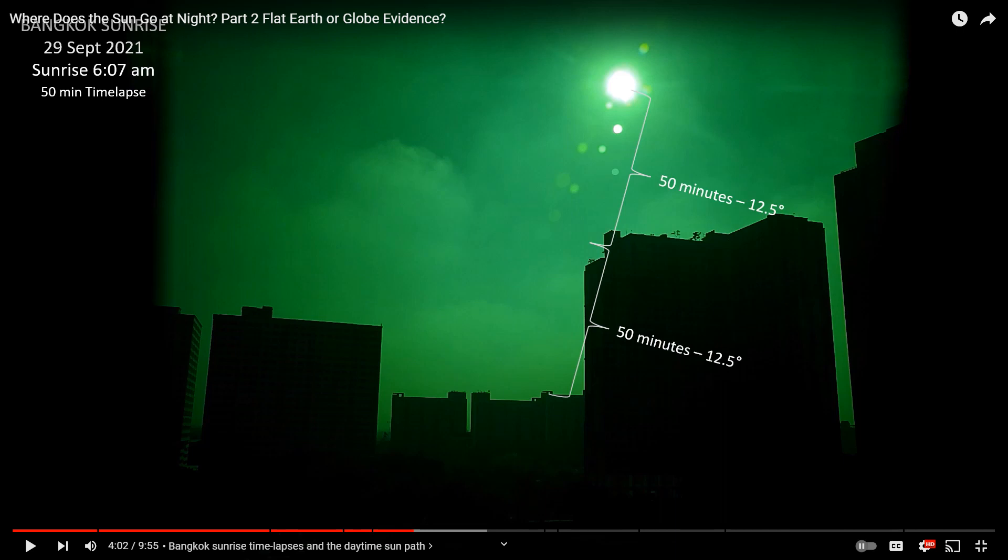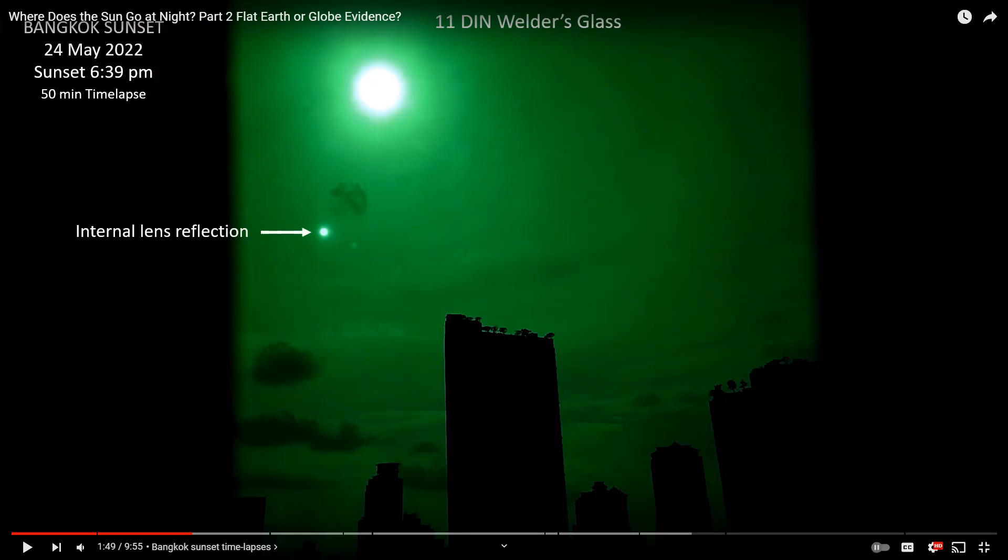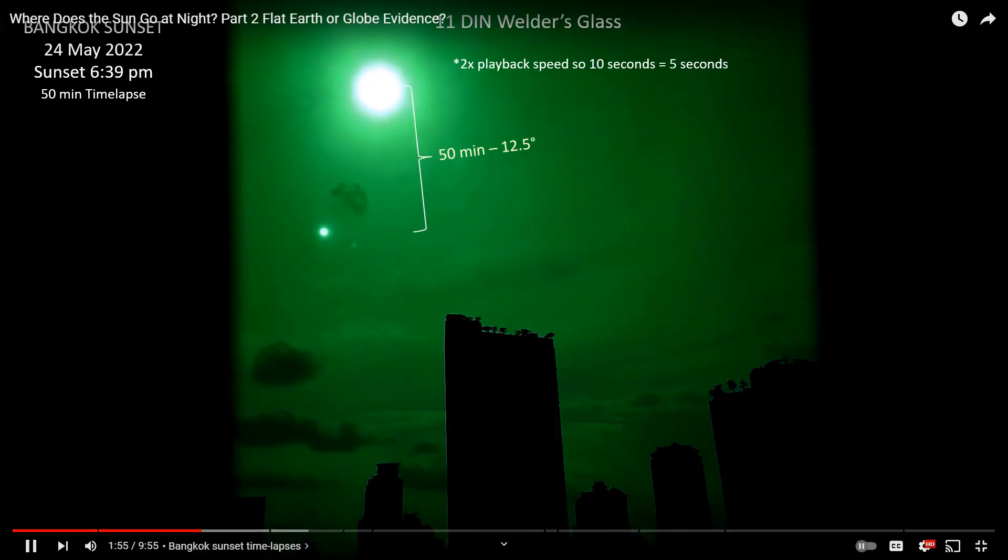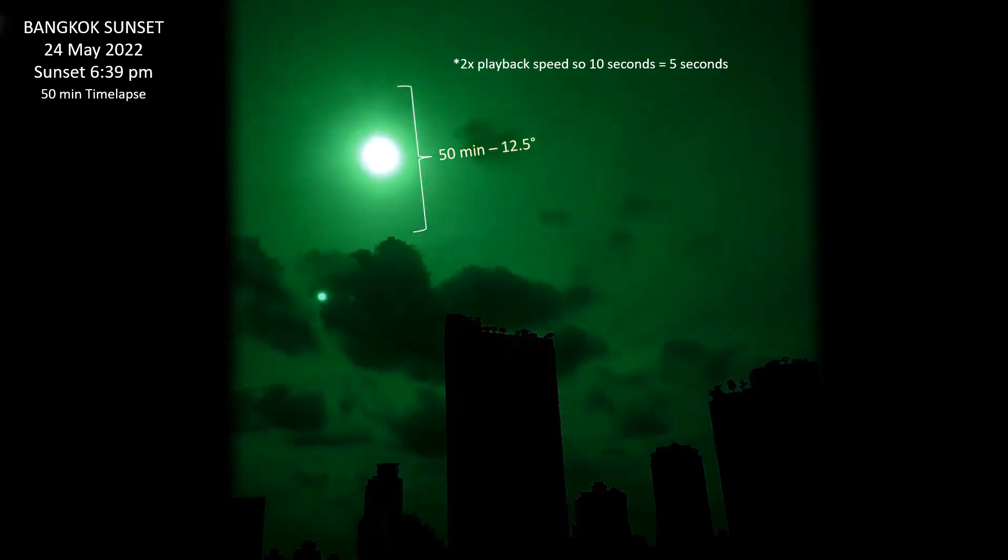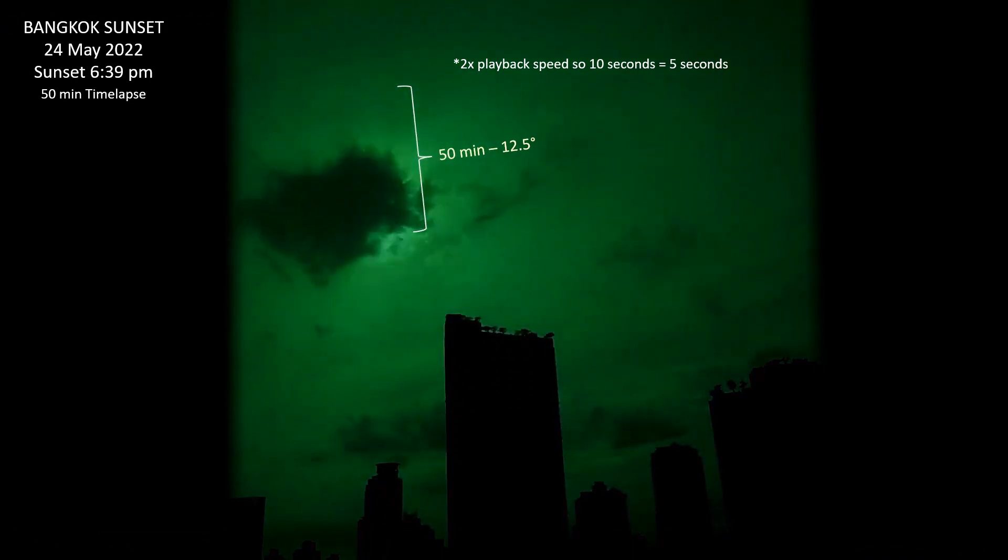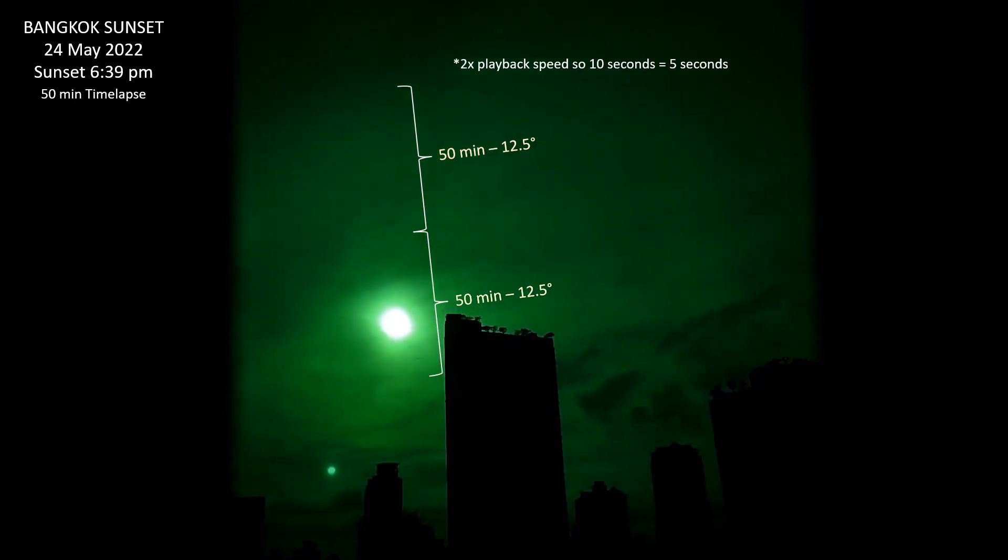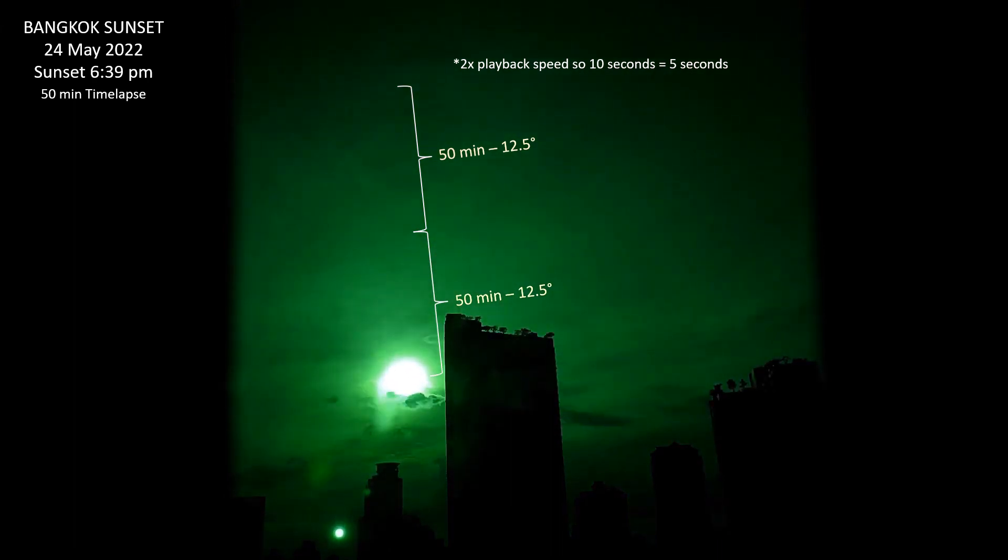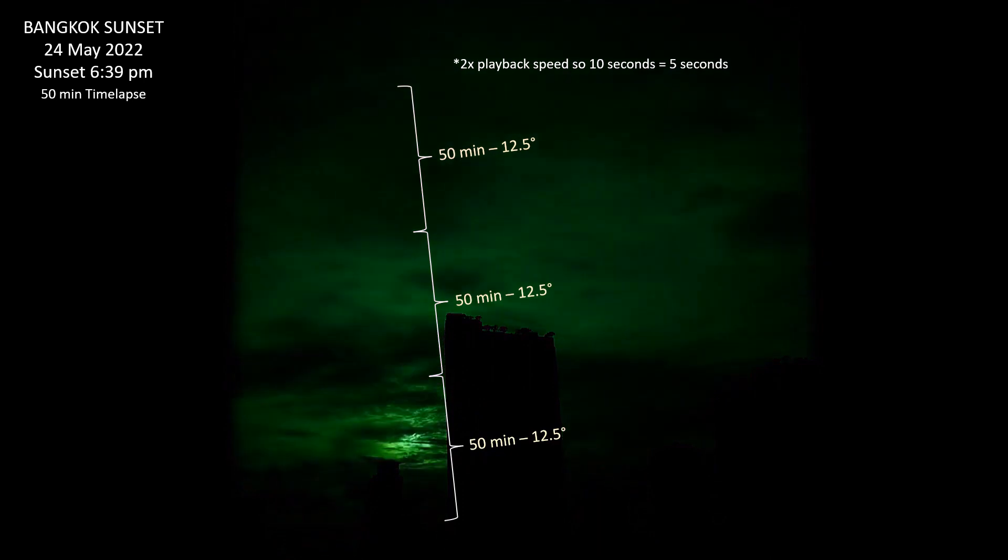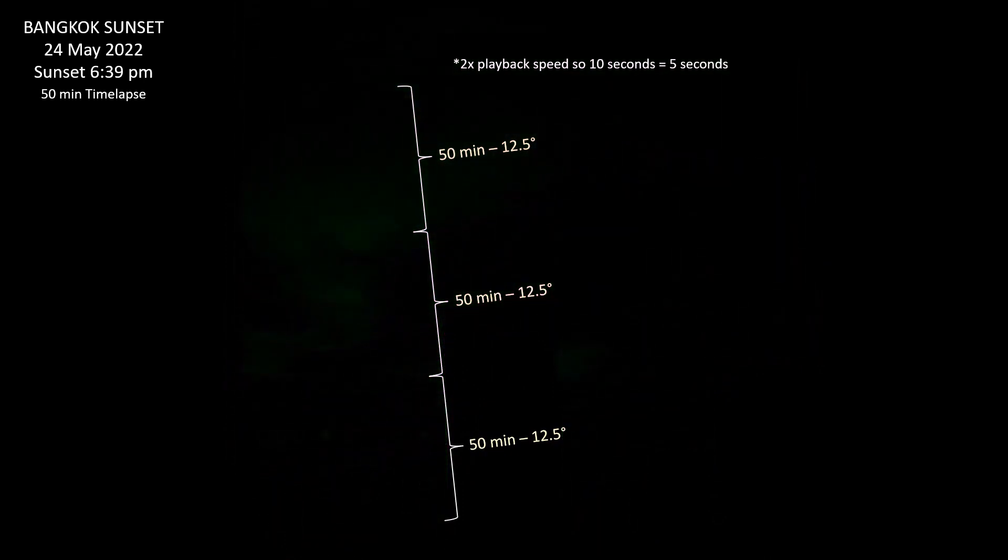And here is the second time-lapse. And you can see that the sun moved the same angular distance for each of those 50-minute segments. And here are some time-lapses for sunset. So here's the first 50-minute segment. And the second one. And I tried for a third one, but rain clouds moved in, and it just got too dark, and they blocked the sun.